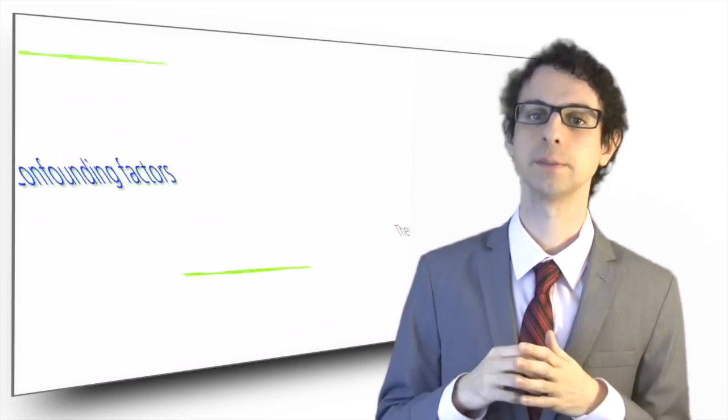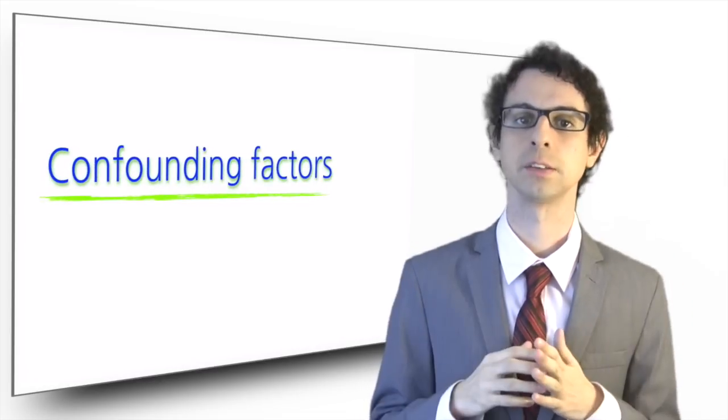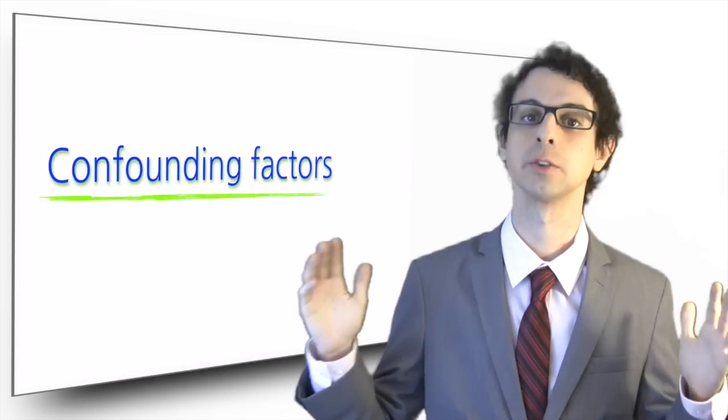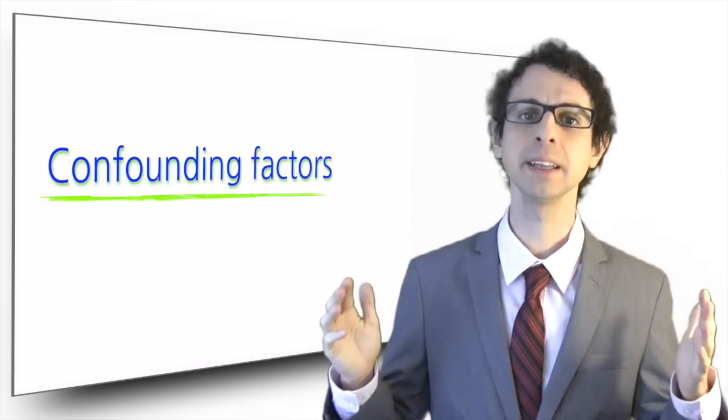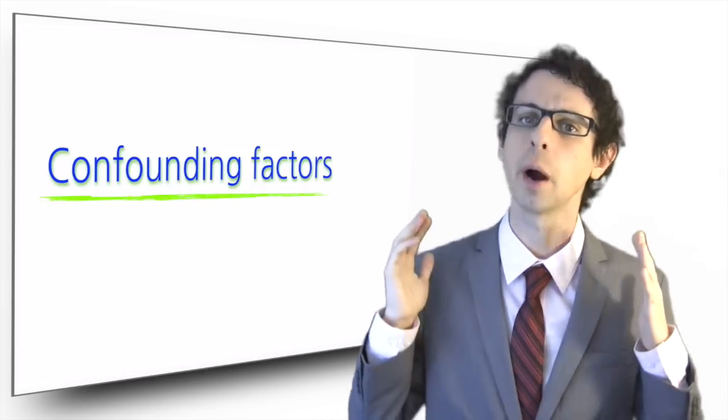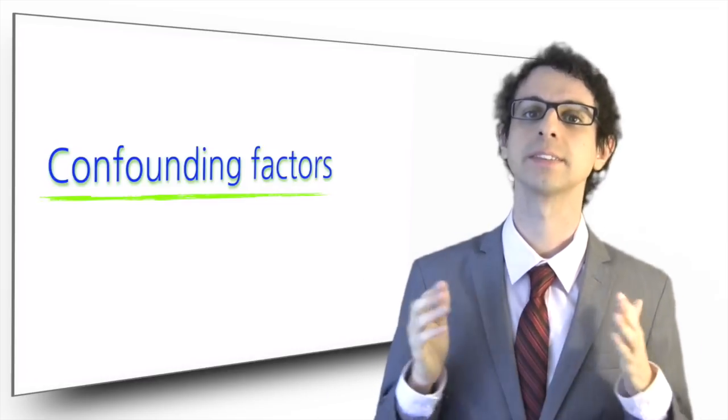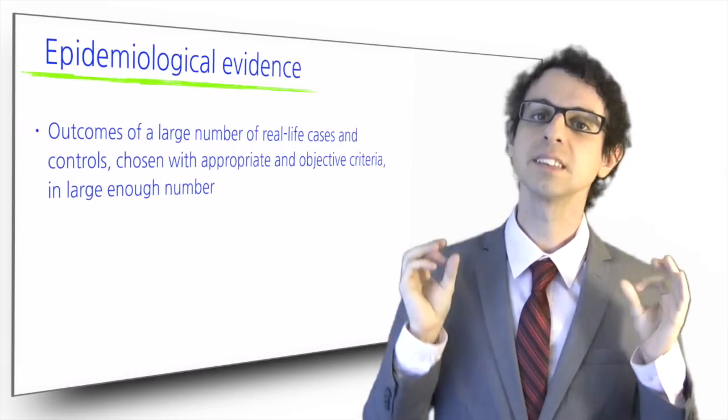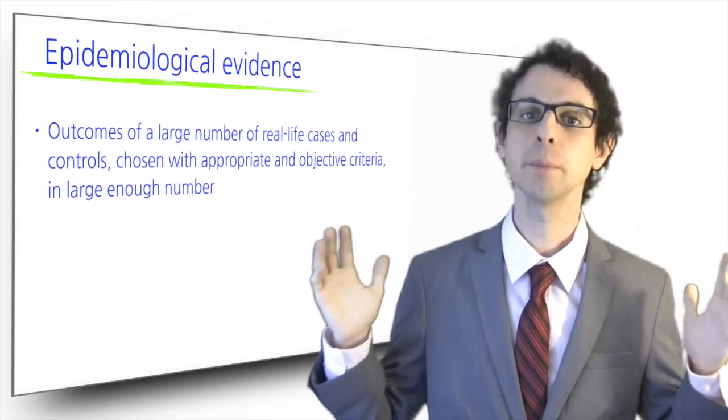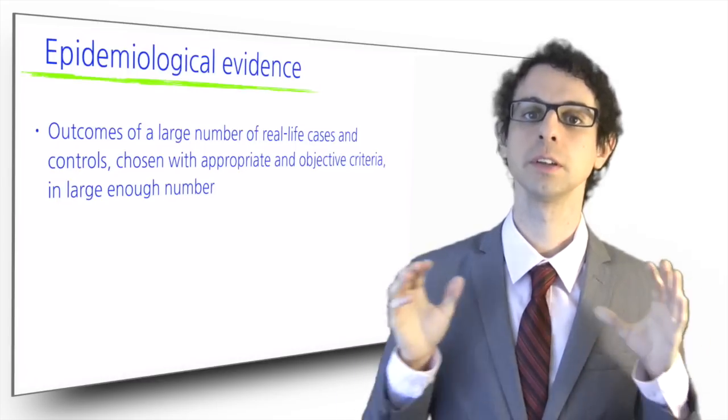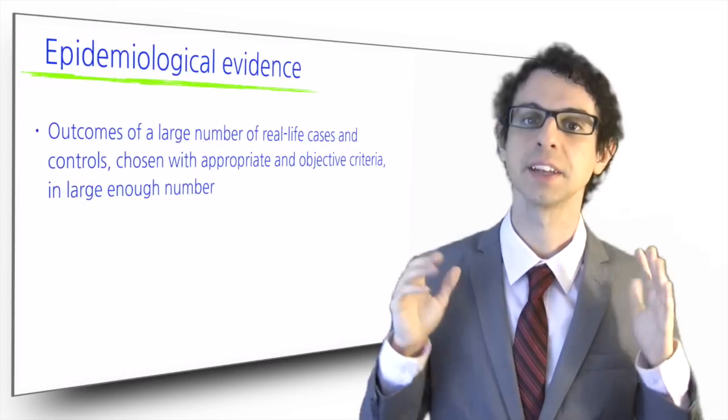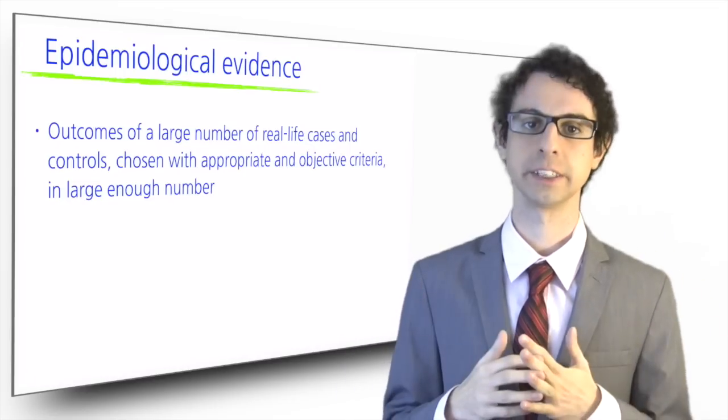Designing controlled experiments is not always possible, especially when we want to evaluate the effect of whole dietary pattern over the long term, because they would be prohibitively long, expensive, and require incredibly large number of study subjects. In these cases, scientists rely on epidemiological evidence, that is, studying the outcomes of a large number of real-life cases and controls chosen with appropriate and objective criteria, in large enough number that the outcomes can be of statistical significance.